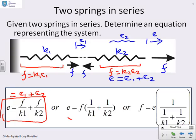Now I can rearrange that, or I can put it into a standard form over here where I've got force equals the overall extension times some constant kt, where that kt is 1 over (1 over k1 plus 1 over k2).